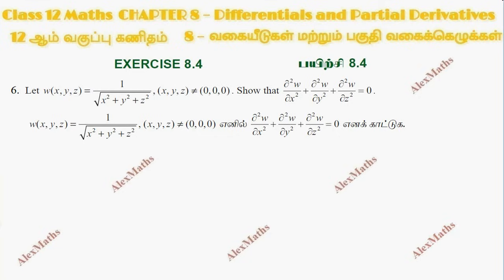Hi students, this is Alex here. Question number 6: we have obtained our function w in terms of x, y, z. This is the partial derivative to second order with respect to x, with respect to y, with respect to z, and we have to add them to prove they equal zero. So first, the denominator will be cleared — differentiation on the first term, we have to re-write.